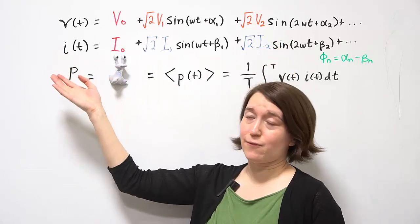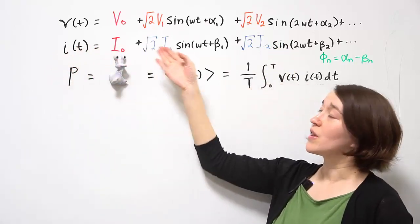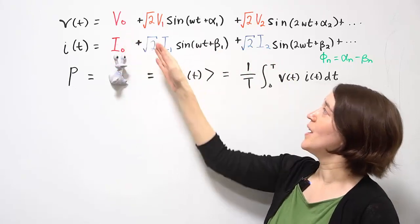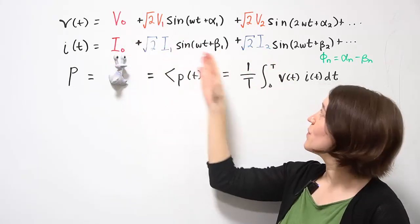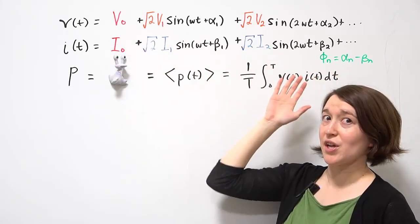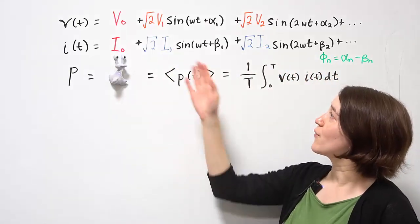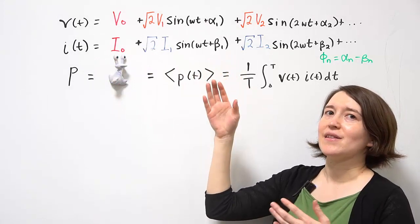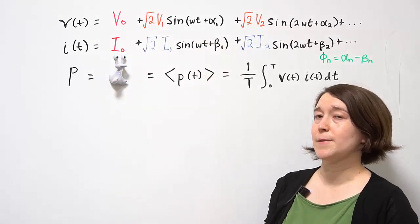And for the current it's the same form where we're using the RMS values. Remember this is our DC component, our fundamental term and then our higher order harmonic terms. And for current we're using beta as our phase shift because these phase shifts may be different.